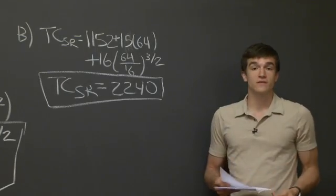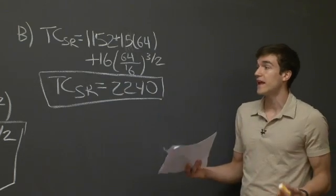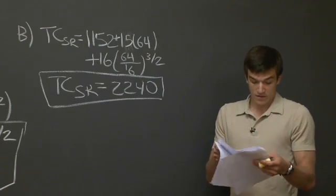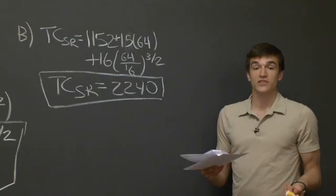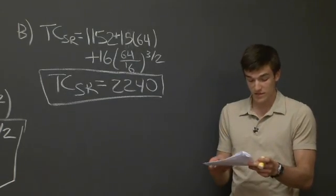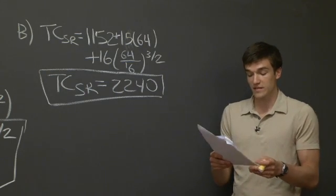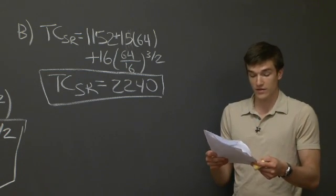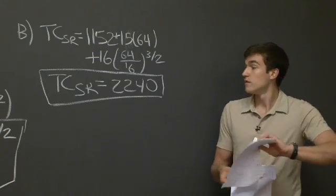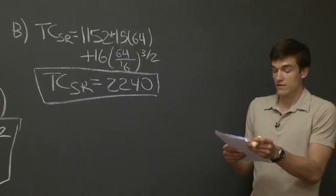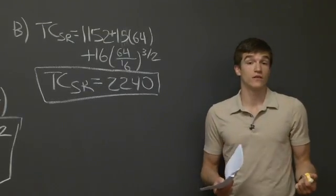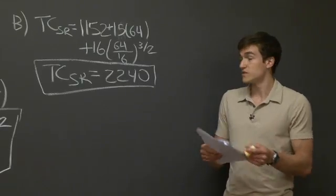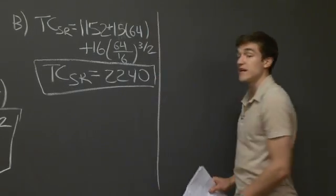The more interesting part is what happens when instead of fixing capital at 8, the producer can change the amount of capital used. Part D says: in the long run, the farm can change its capital level. By minimizing cost subject to the production function, we derive the cost-minimizing demands for k and l as a function of output q, wage rate w, and rental rate r. We use the marginal rate of technical substitution — similar to the marginal rate of substitution in consumer theory — which must equal the price ratio.